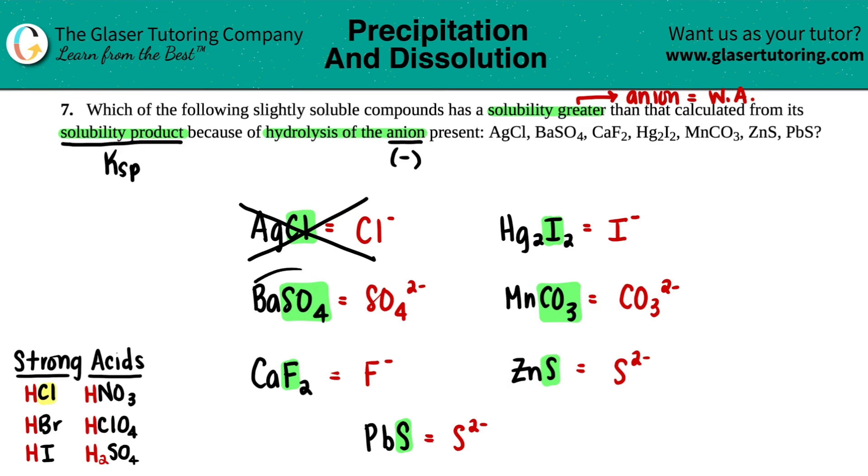So this is coming from a strong acid, so that has nothing to do with making that solubility greater—this is not one of them. The next one, the anion is SO4. Is any of the anions in a strong acid SO4? Yes, it is.